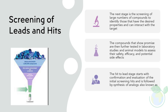Screening of leads and hits: The next stage is the screening of large numbers of compounds to identify those that have the desired properties and can interact with the target. This is typically done through high-throughput screening, which uses automated systems to test thousands of compounds at once. The compounds that show promise are then further tested in laboratory studies and animal models to assess their safety.